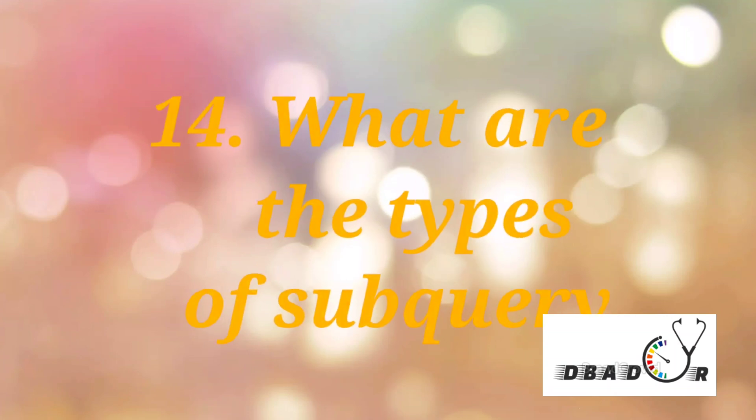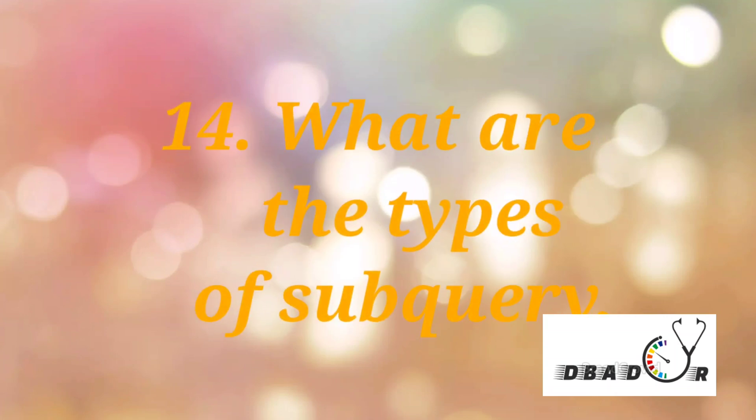Next, what are the types of subquery? There are two types of subquery: correlated and non-correlated. A correlated subquery cannot be considered as an independent query but it can refer to a column in a table listed in the FROM clause of the main query. A non-correlated subquery can be considered as an independent query and the output of the subquery is substituted in the main query.